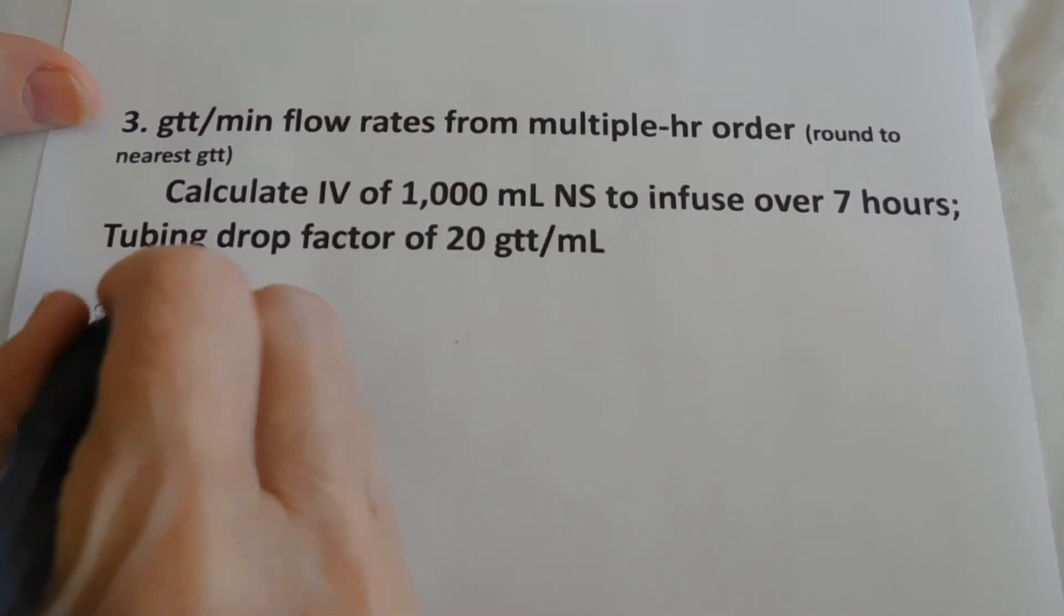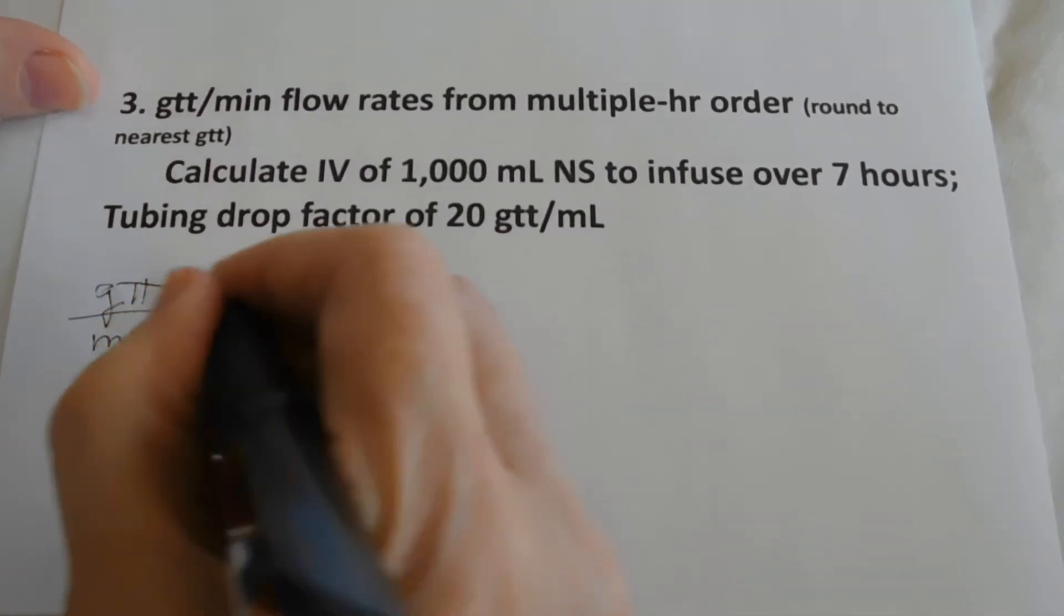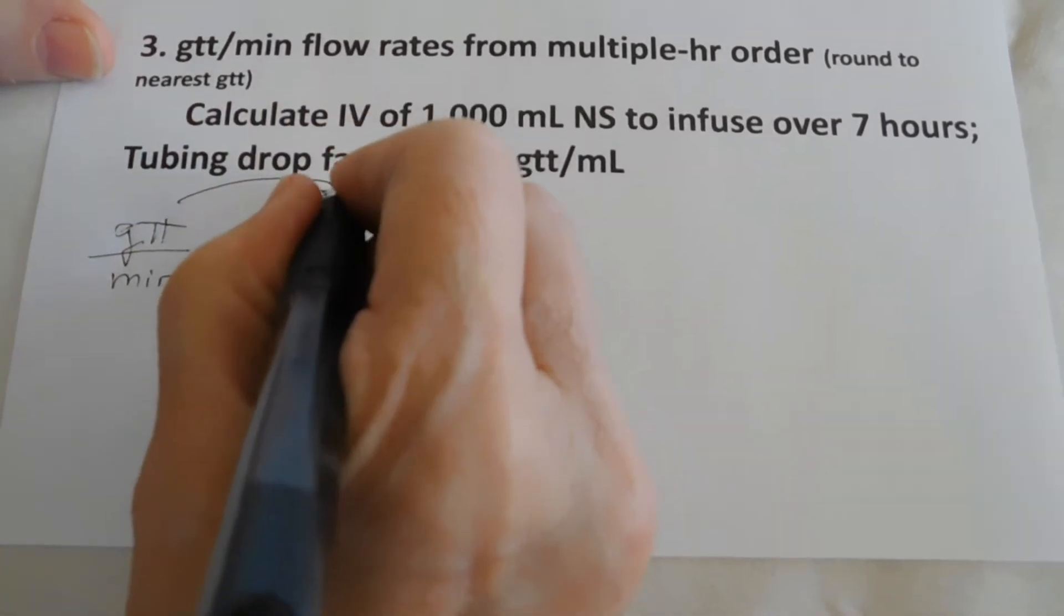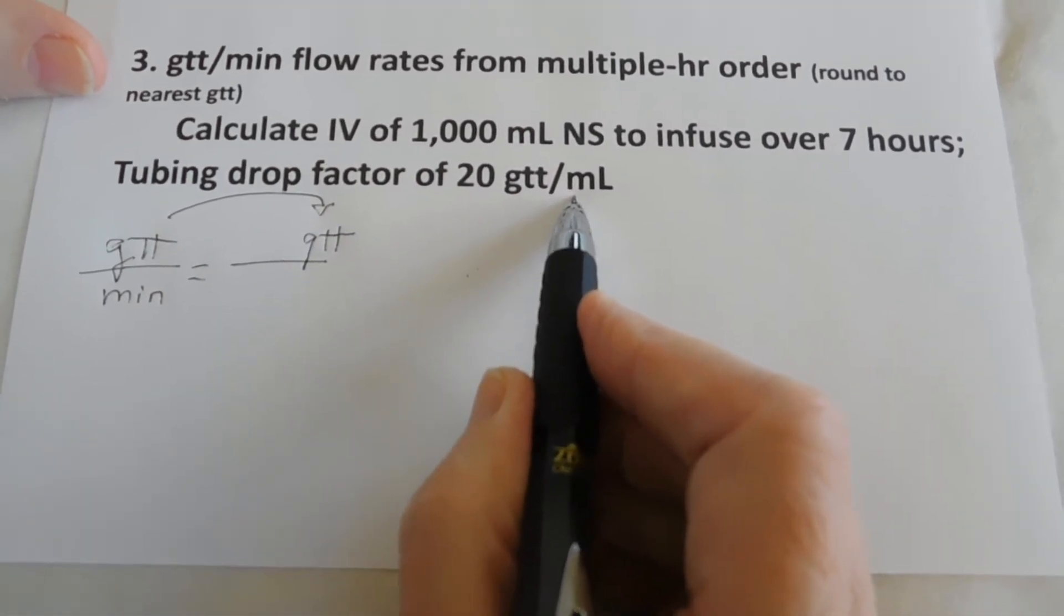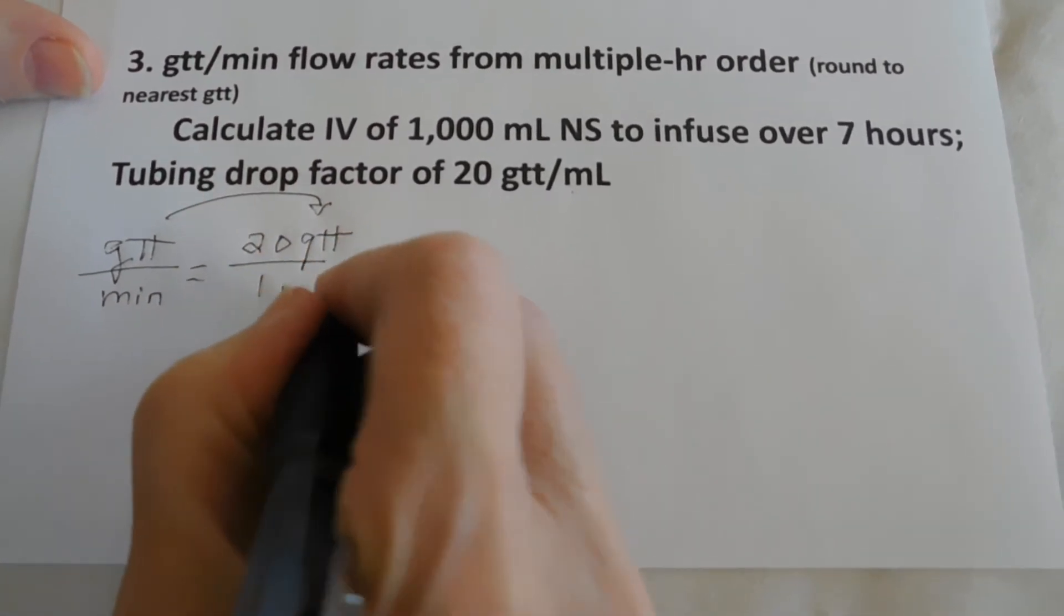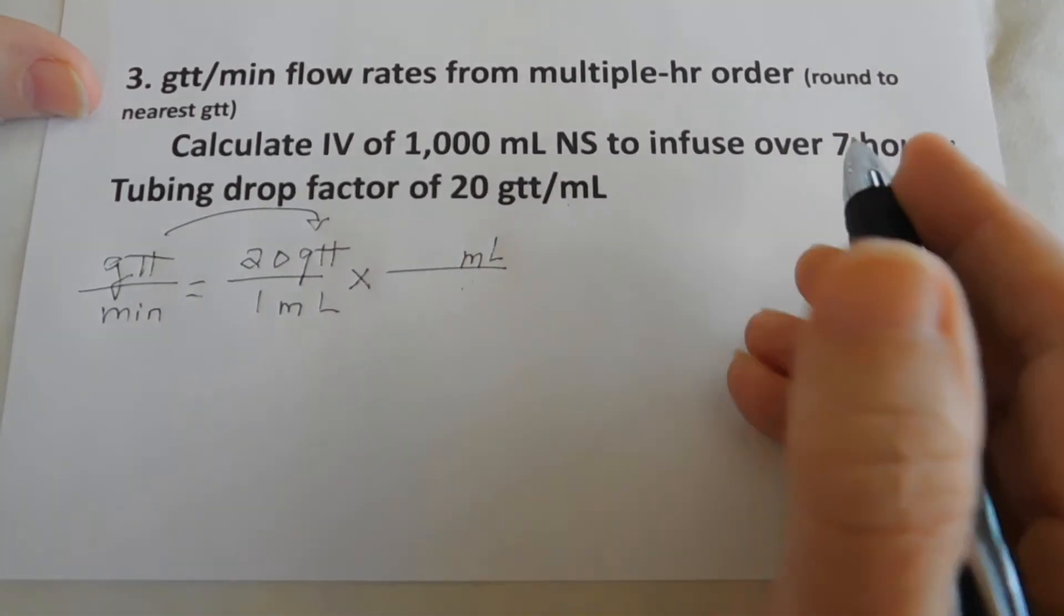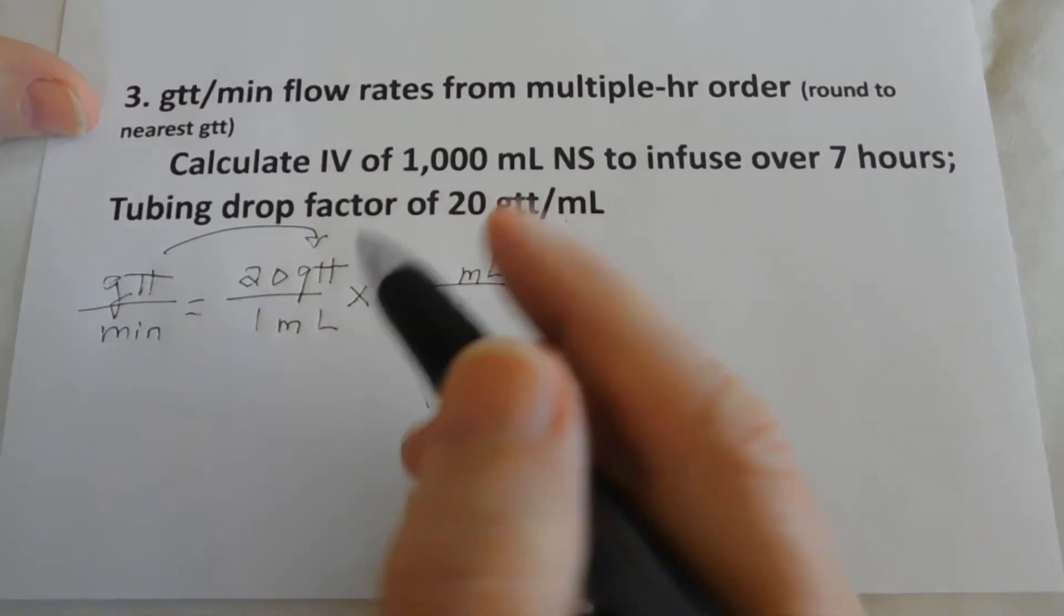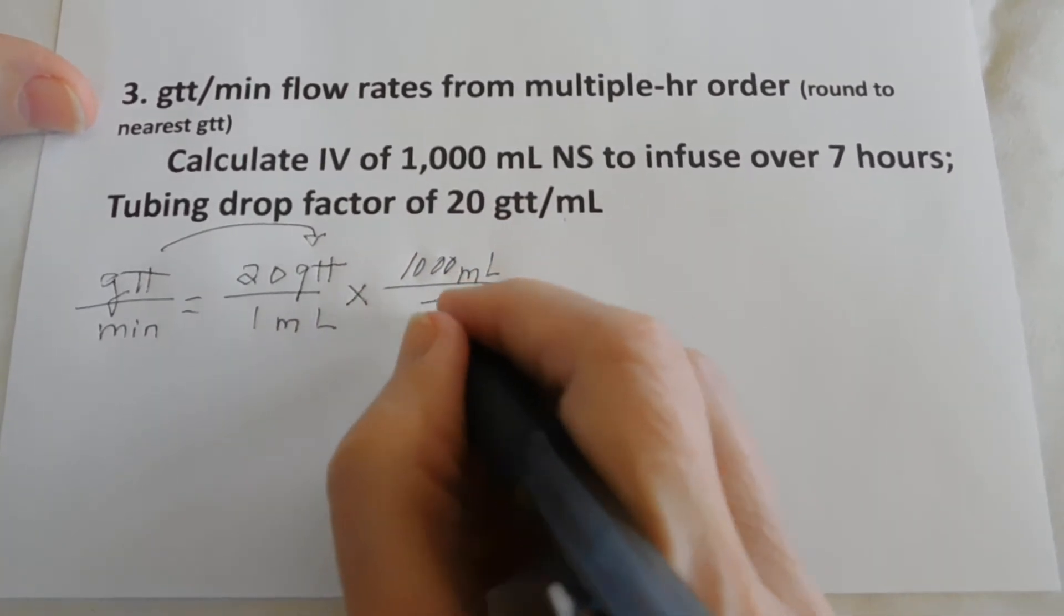So we're going to put drops per minute equals. And we know that in the numerator, we must put drops. So what do we have with drops? Well, we have 20 drops is 1 milliliter. 20 drops in 1 milliliter. And we climb the hill with milliliters. What do we have with milliliters? Well, we have 1,000 milliliters of normal saline in 7 hours. So 1,000 milliliters in 7 hours.